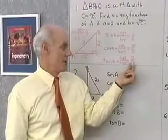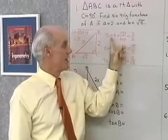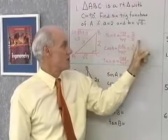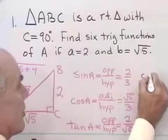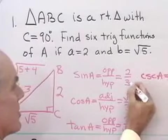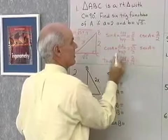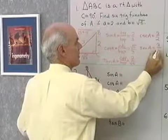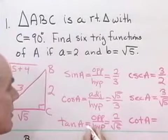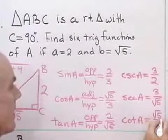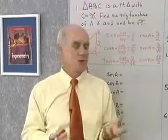I want to also find cosecant, secant, and cotangent. To do that, I'll use the reciprocal identities. Cosecant of angle A is the reciprocal of sine, so 3 divided by 2. Secant of angle A is the reciprocal of cosine, so 3 over square root of 5. Cotangent of angle A is the reciprocal of tangent, so square root of 5 over 2. That's how we use the second definition to solve for the missing parts in a triangle.